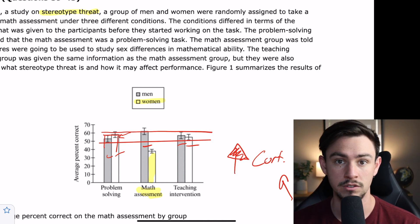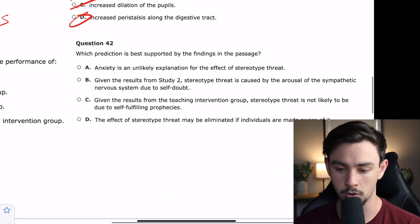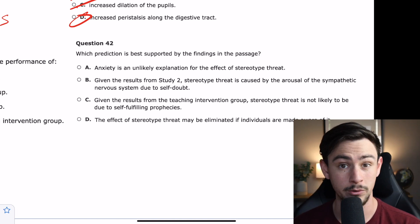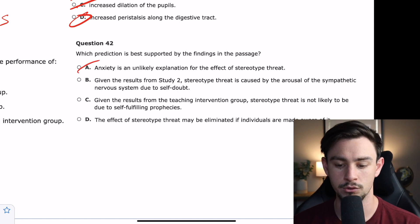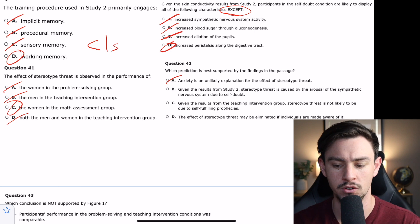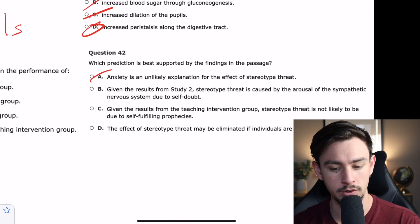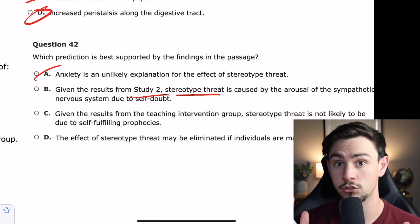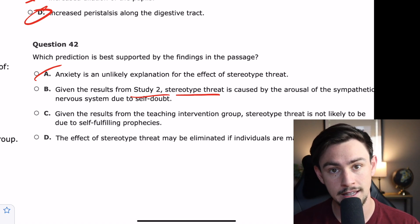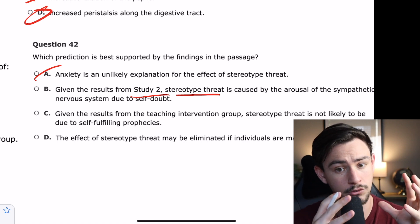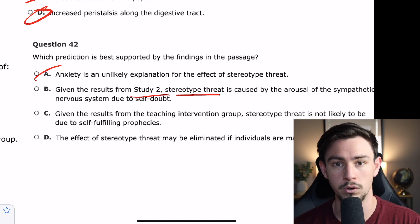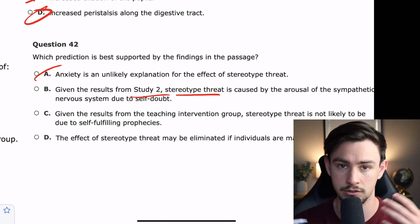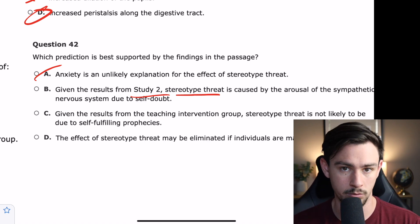42 says, which prediction is best supported by the findings in the passage? Ooh. This one's just pretty much saying which of these is true. A says, anxiety is an unlikely explanation for the effect of stereotype threat. Why? Where's your support for that? Maybe not A. B says, given the results from study two, stereotype threat is caused by the arousal of the sympathetic nervous system due to self-doubt. I don't know that study two focused on self-doubt at all. It also didn't really focus on stereotype threat. Study one focused on stereotype threat. So, notice, they were mixing studies, and that's why I warned you earlier, you've got to be able to separate your mind study one from study two and figure out the goals behind each and the basic sciences behind each. Because if you don't, then you can kind of blend them and melt them together, and then you look at B and you're like, oh, that sounds pretty good. I kind of like it. But B is not the correct answer, right? Because study two was looking at anxiety and self-doubt, self-confidence, and how that impacted your memory, whereas study one was the one that was looking at stereotype threat. So, maybe not B.